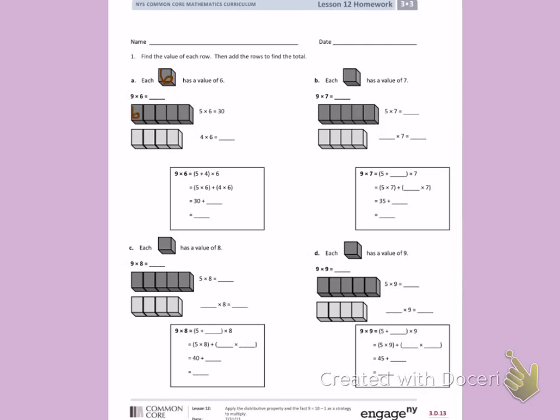I have 1 6, 2 6's, 3 6's, 4 6's, 5 6's, and they have told me that 5 times 6 equals 30. Down below, I have 1 6, 2 6's, 3 6's, and 4 6's. So they have written the problem as 4 times 6.